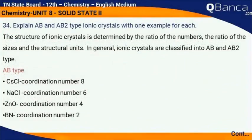Explain AB and AB2 type ionic crystals with one example for each. The structure of ionic crystals is determined by the ratio of the numbers, the ratio of the sizes, and the structural units. In general, ionic crystals are classified into AB and AB2 types.